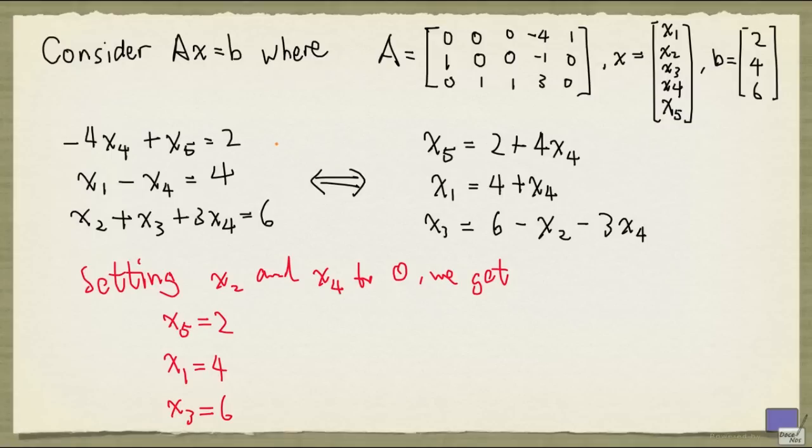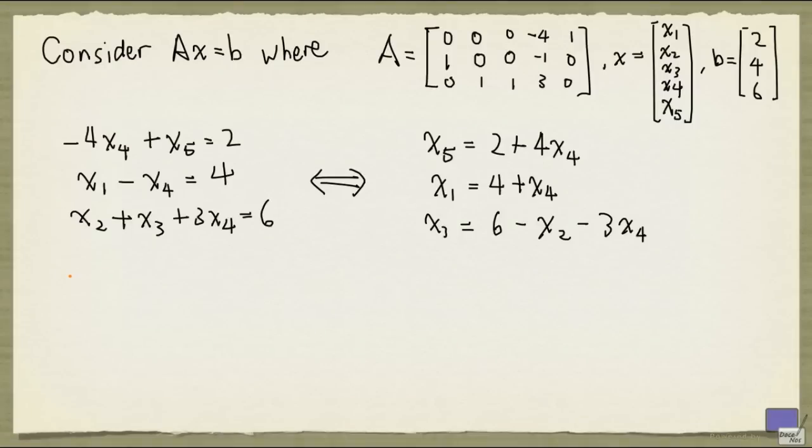But let me rewrite this system a little bit. I'm going to space the variables out, and I'm going to write the variables in a different order as follows. I'm going to write down the second equation first, and then the third equation second, and with the first equation as the last equation in this new system, where x5 appears before x4.